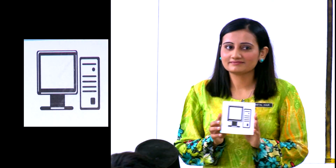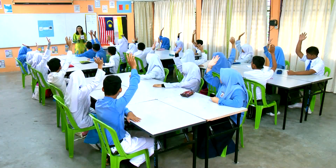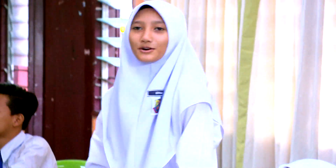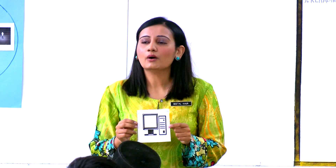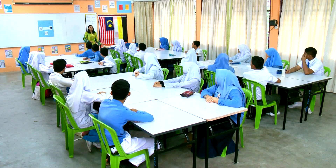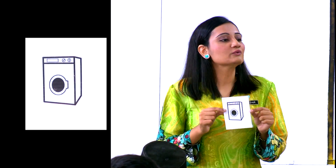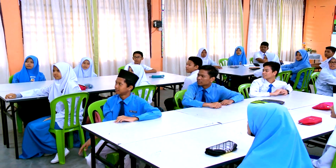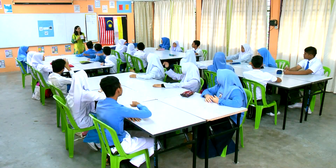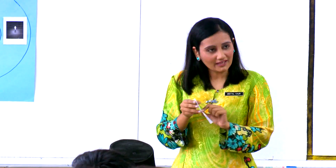Next. What is this, class? Computer. Okay, and how different would our life be like without a computer? Okay, what is this, class? Washing machine. And how different would our life be without a washing machine? Shakina? Washing machine can help us to wash clothes. So without a washing machine? We can't wash clothes. Okay, you might have trouble washing clothes. Thank you very much.